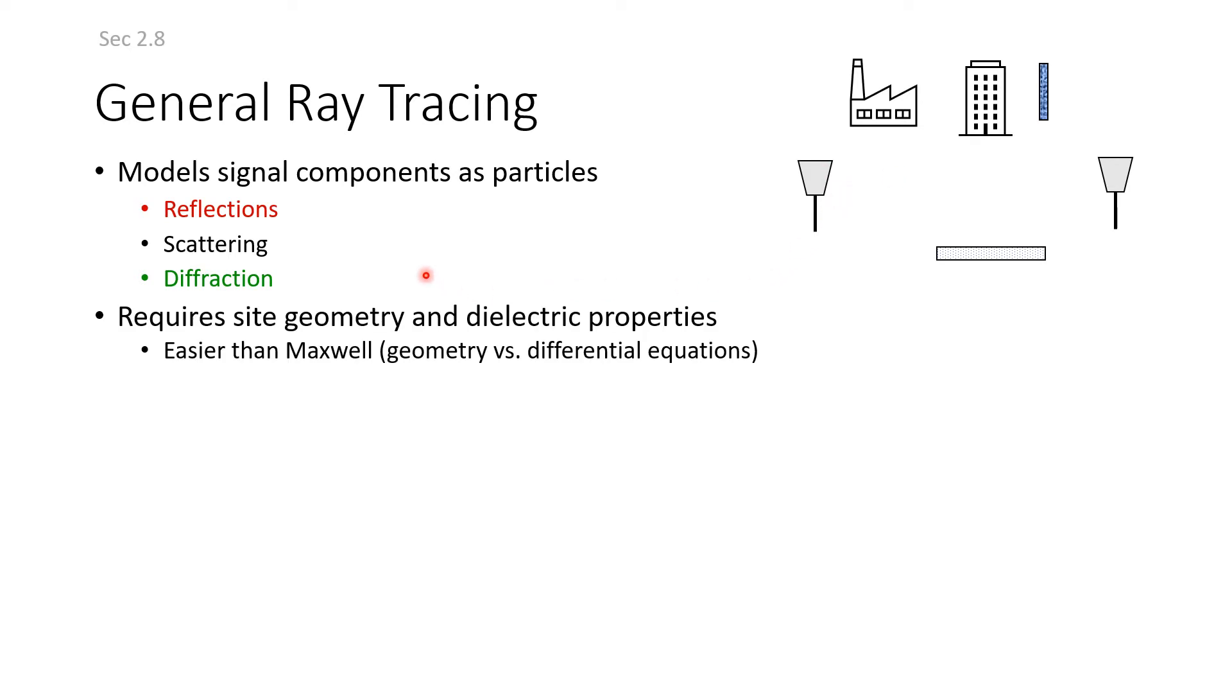General ray tracing models include reflections, scattering, and diffractions. We represent objects as small component particles as if we have mirrors reflecting. It requires site geometry, dimensions of main objects, and their dielectric properties—good reflectors versus weak reflectors. This is easier than Maxwell equations: geometry versus differential equations.